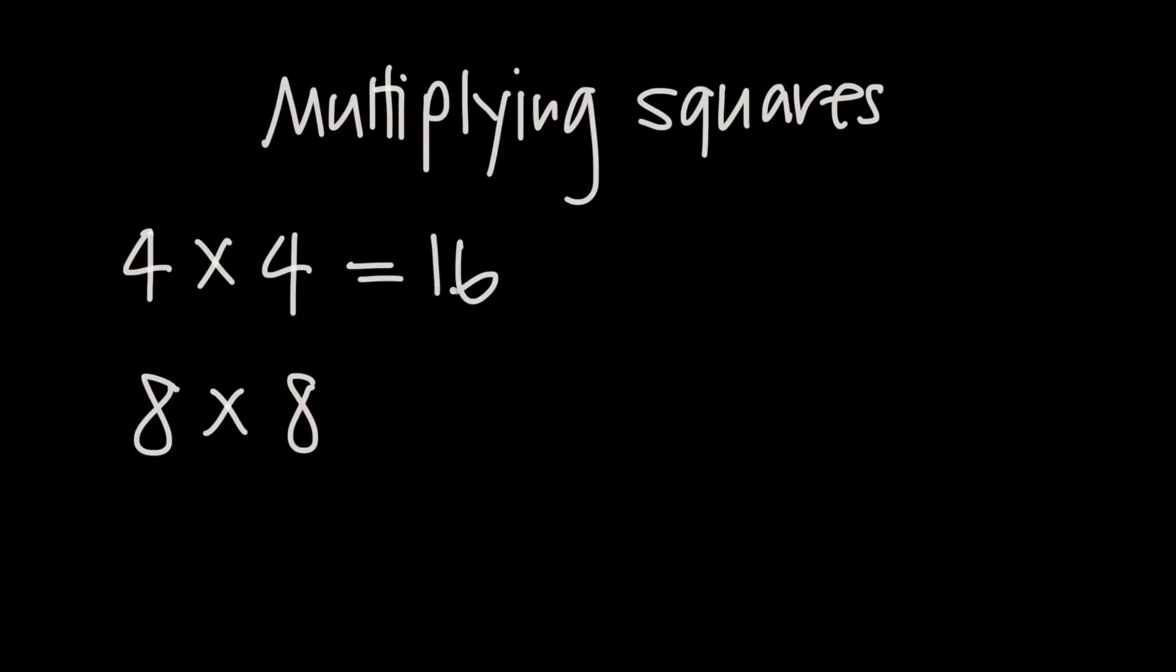But when it comes to multiplying larger squares together, when we get up into the teens like 17 times 17, or certainly higher, maybe 33 times 33, multiplying squares starts to get much more difficult, and we probably don't have any way to find the answer quickly without a calculator.